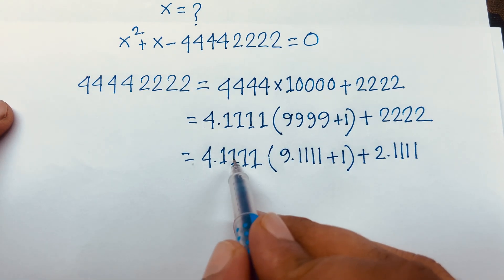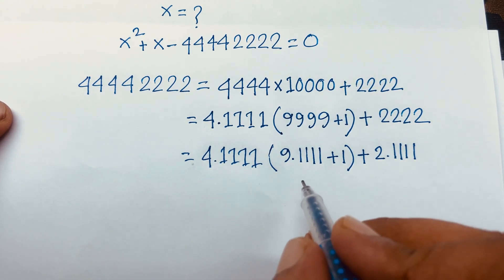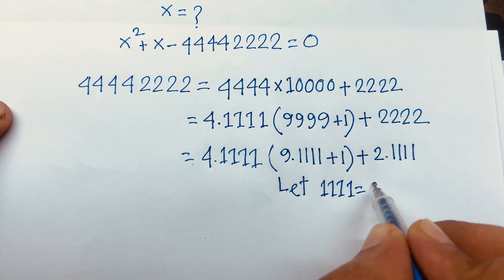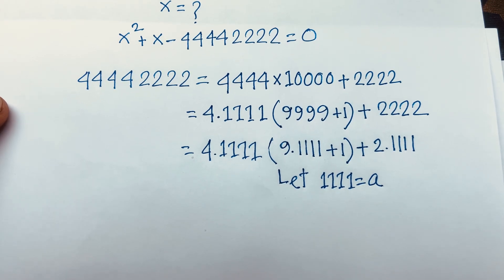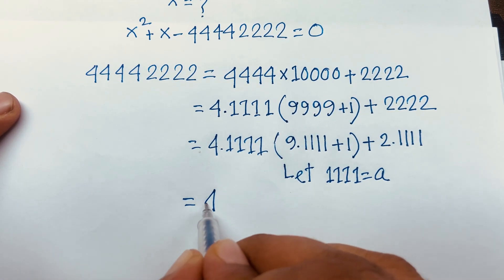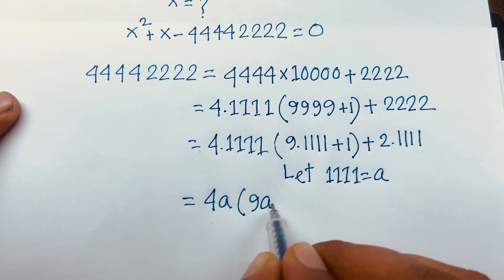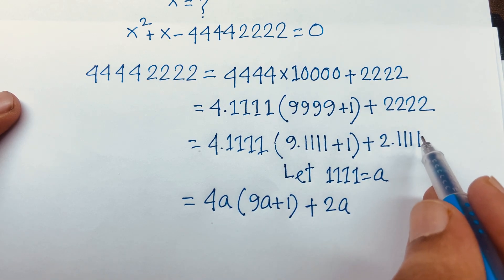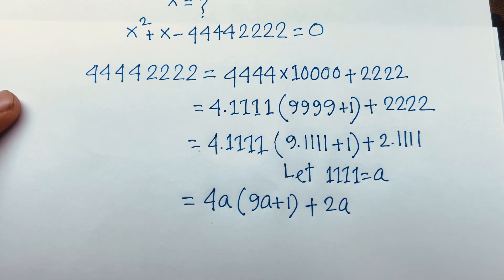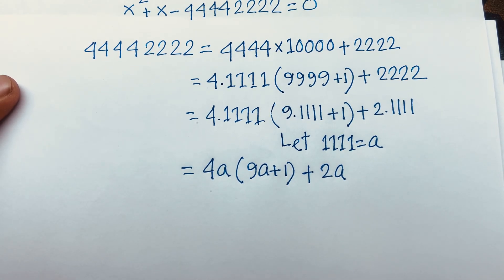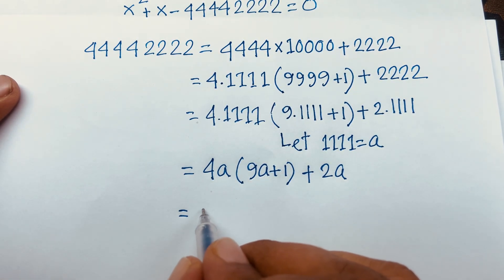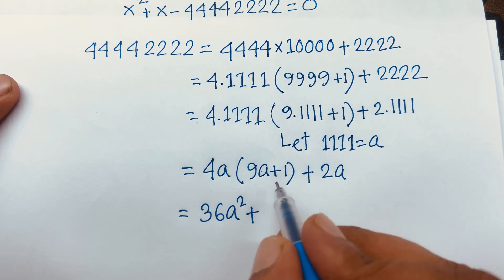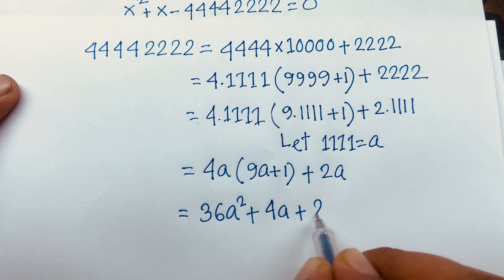Let 1111 equal a. So in this case it will be 4a times 9a plus 1, and here is 2a. Because 1111 equals a. Then it will be 4 times 9 equals 36, and a times a equals a squared, plus 4a times 1 equals 4a, plus 2a.